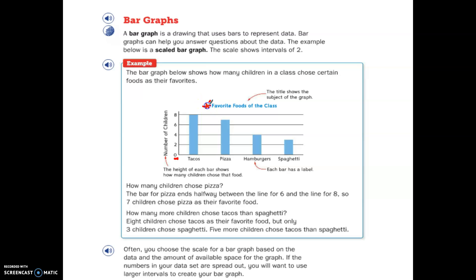All bar graphs do have titles. They must have a title. The title of this bar graph is Favorite Foods of the Class. So the height of each bar shows how many children chose that food. And then the labels down here are what the foods are: tacos, pizza, hamburgers, and spaghetti.